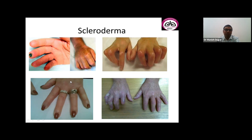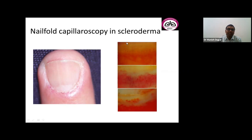Nail fold capilloscopy, especially in patients with myositis and scleroderma, is a good bedside tool. It can be performed with a dermatoscope or ophthalmoscope to look for capillary hemorrhages and dropouts. Even with the naked eye or a magnifying glass, looking at the nail folds in the clinic may give useful clues.